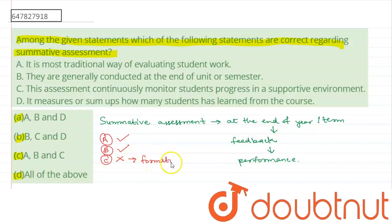In formative assessment, the student's progress is continuously monitored, but in summative assessment, the progress at the end of year or term or unit or semester is measured. If we talk about statement D, it says it measures and sums up how many students have learned from the course.